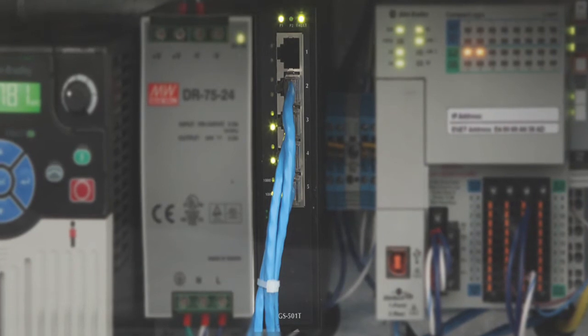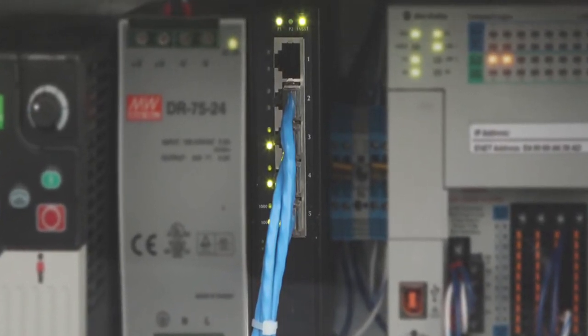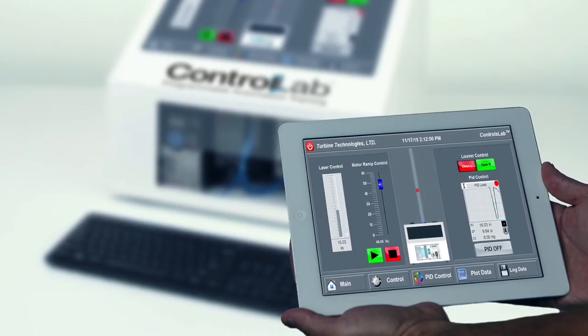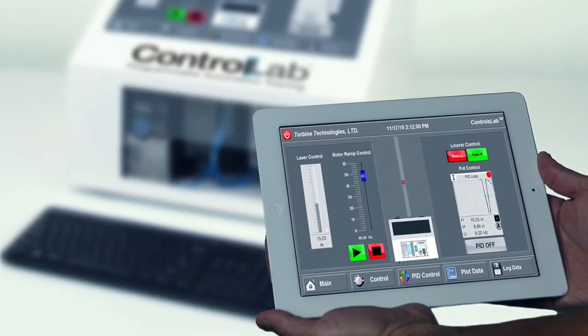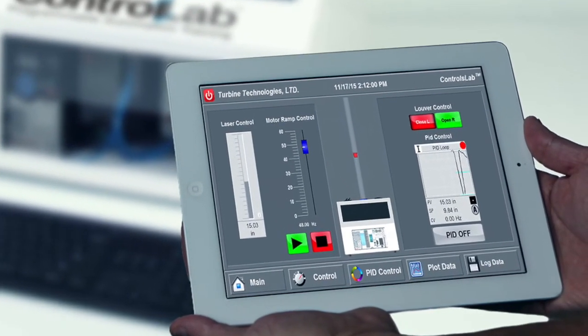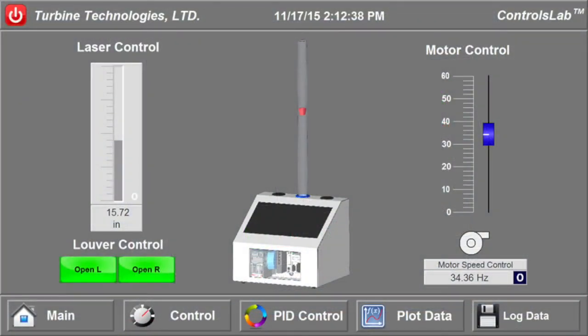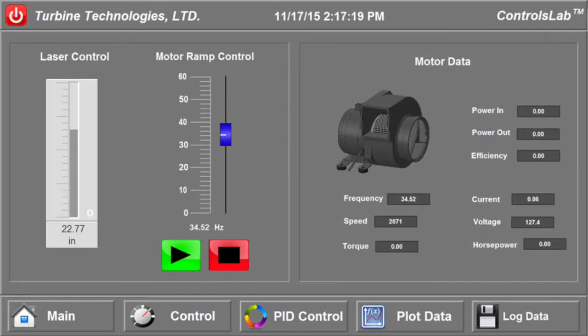Students learn how an Ethernet system connects all these elements together for effective communication with each other. They also discover that Ethernet enables them to connect with and control the system remotely through the Internet and with wireless devices, versus having to accomplish all communications strictly through the local HMI.